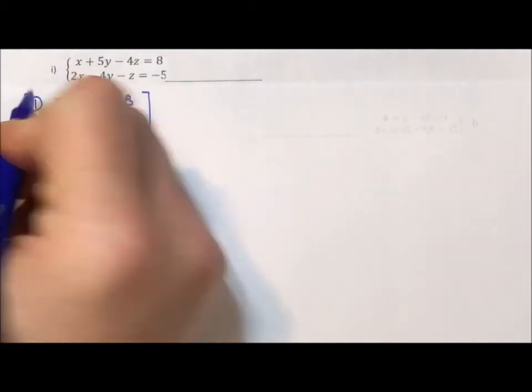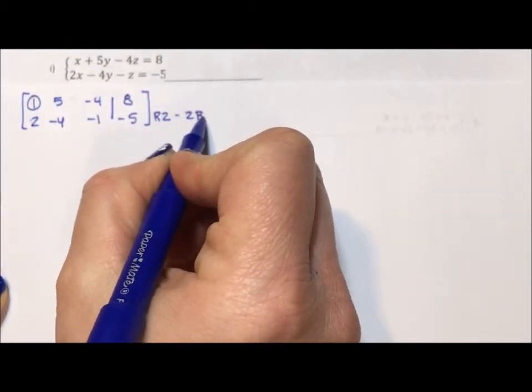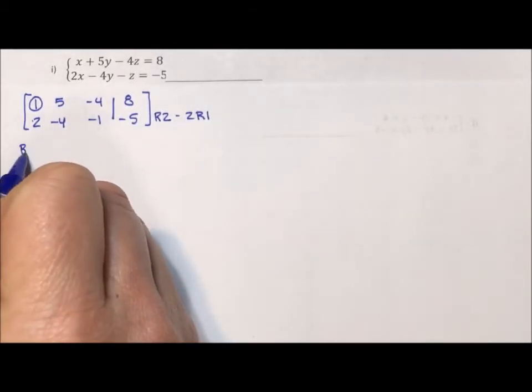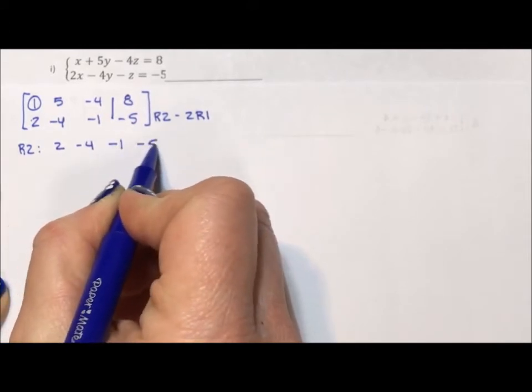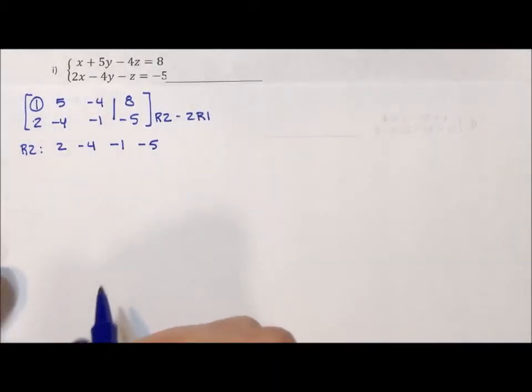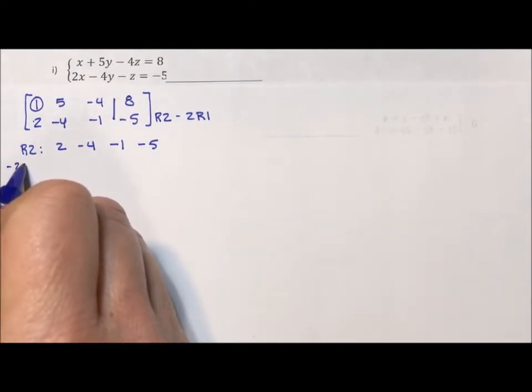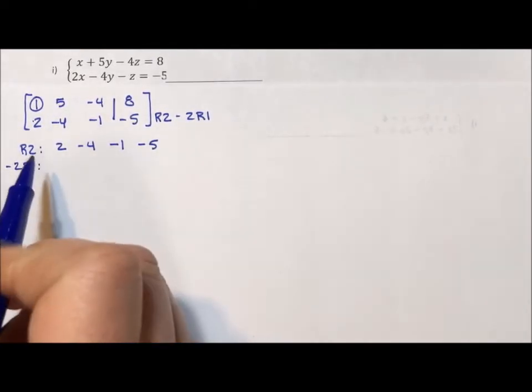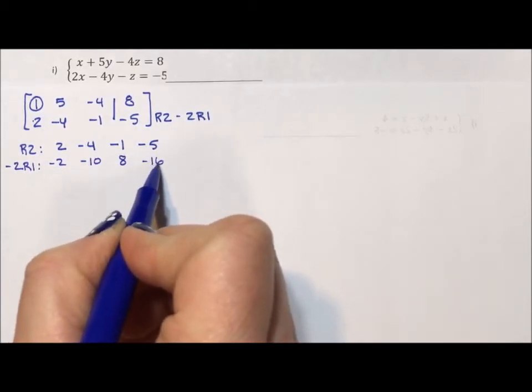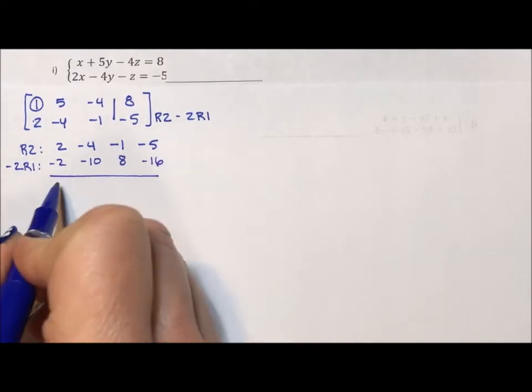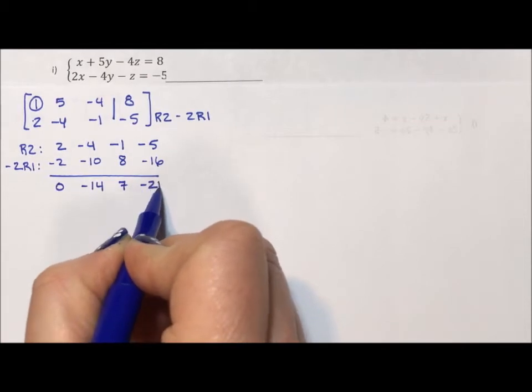Okay, so I'm going to pivot on this 2. And the way I'm going to pivot on the 2 is I'm going to say row 2 minus 2 row 1. Row 2 is 2, negative 4, negative 1, negative 5. For this, notice I have negative 2 times row 1. I'm actually going to do all of that, negative 2 row 1. Negative 2 times row 1 is negative 2, negative 10, 8, and negative 16. When I add down, I'm going to get a 0, negative 14, 7, and negative 21.